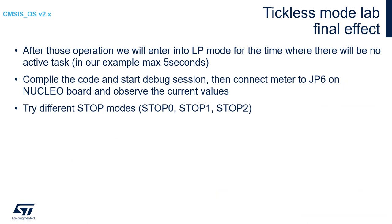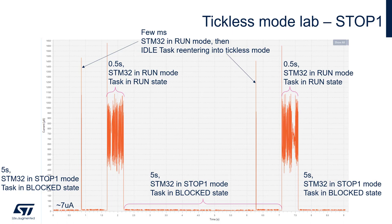What would be the visible effect? After those operations, we will enter into the selected low-power mode for the time where there are no active tasks — in our example, 5 seconds. After this, the active task will toggle the LED or send '1' over SWO, and remain active for half a second by calling HAL_Delay. You can check the effect using different stop modes — Stop 0, Stop 1, and Stop 2 — and compare the results. Here is the example of Stop 1 mode. We can see intermediate wake-up events within the 5-second low-power period. After approximately 4194 milliseconds, there is a wake-up caused by protection of the SysTick timer from overflow.